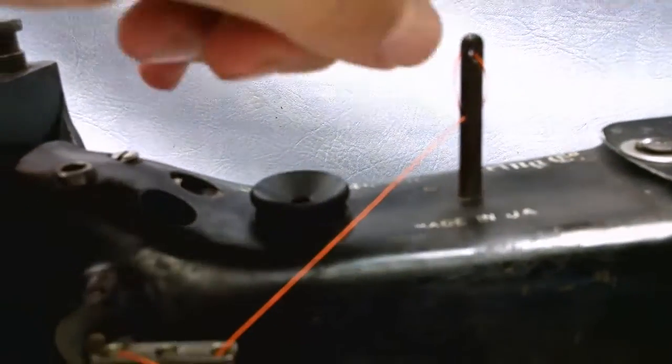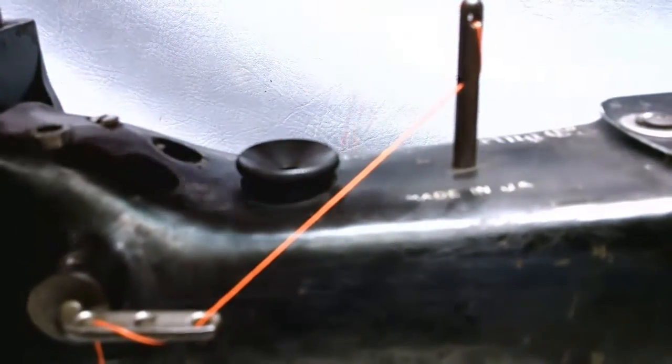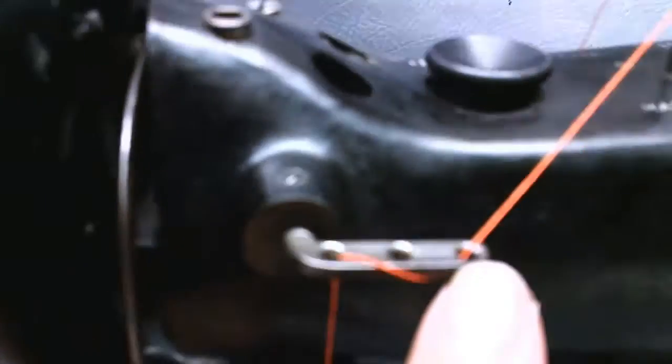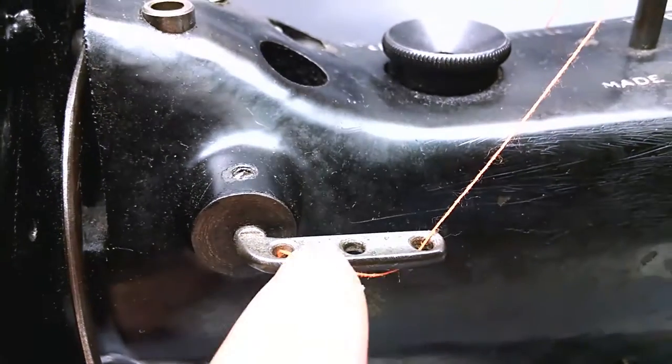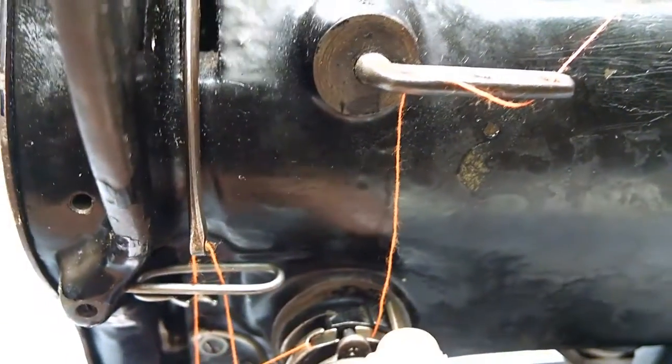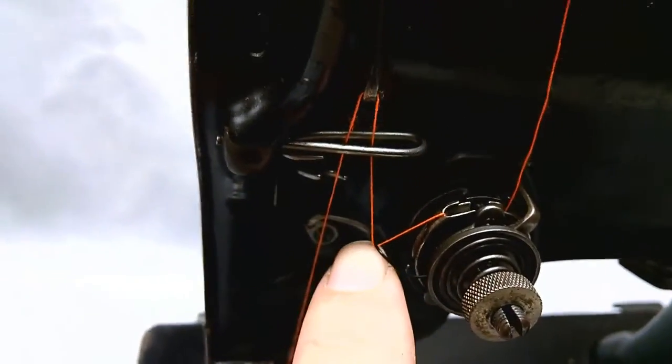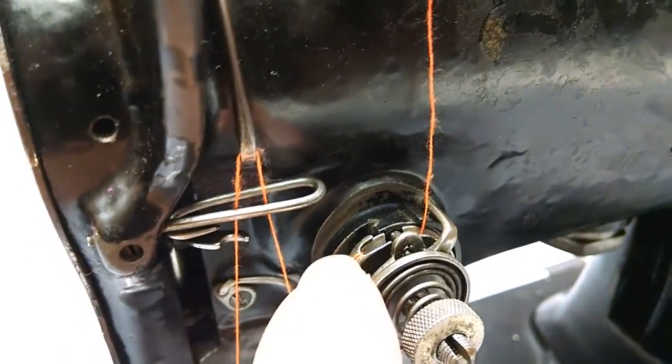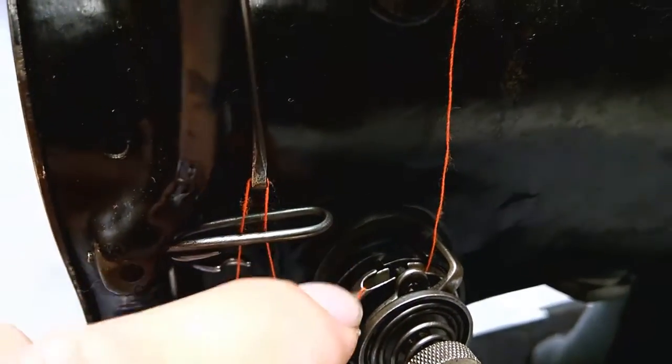Here's the threading. Start out at the top. You should have a top post, so you thread through the top post, come down. This is a pretty standard Singer. You can do one wrap, two wrap, three wrap. You come down, you come on this side of this post and you come under, then back around. You got to hook it over this little hook right there, so you're sitting right there. You've got to make sure you're inside.